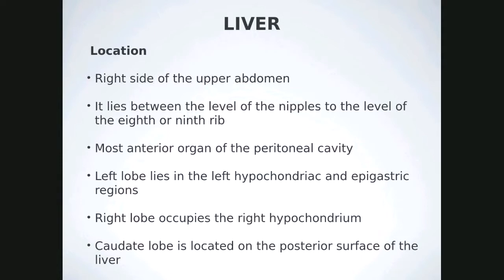The liver is in the right side of the upper abdomen, between the level of the nipples and the 8th and 9th rib. It is the most anterior organ of the peritoneal cavity. The left lobe lies in the left hypochondriac and epigastric regions, and the right lobe occupies most of the right hypochondrium. The caudate lobe is on the posterior surface of the liver.